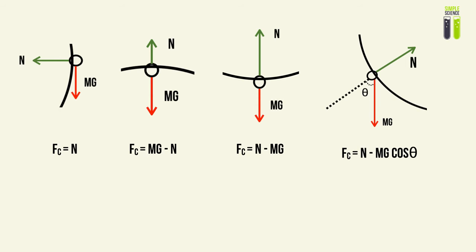In the second position, at the top, the sum of forces towards the center is the weight minus n, because centripetal force acts downwards. In the converse bottom position, it's n minus mg. When considering an angle, we resolve radially to find the component of weight towards the center, which is mg cos θ. Since n acts towards the center and mg cos θ acts away, we take n minus mg cos θ as the centripetal force.